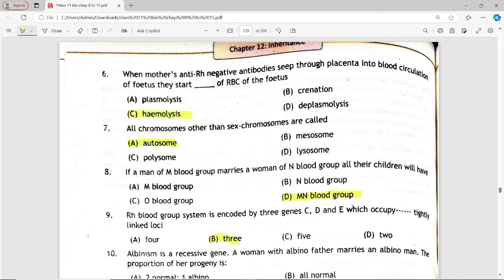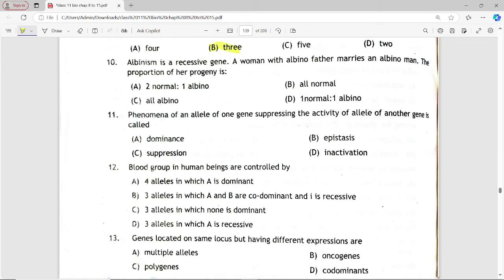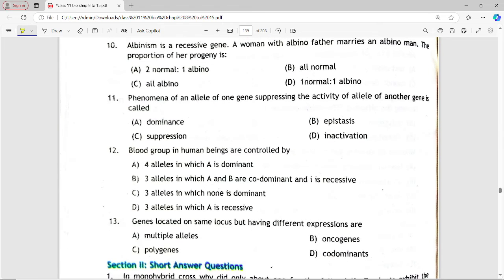Next is: Albinism is a recessive gene. A woman with albino father marries an albino man. The proportion of her progeny is? Options are: 2 normal 1 albino, all normal, all albino, 1 normal 1 albino. Answer is option B, all normal.